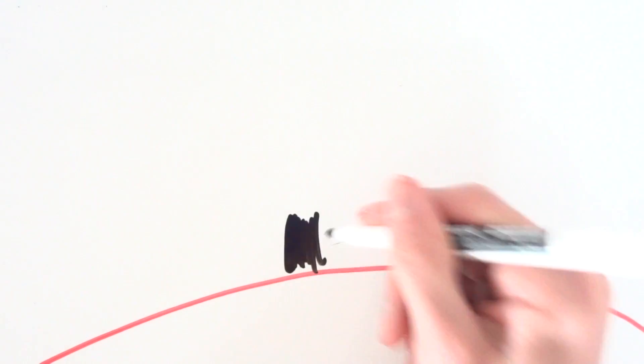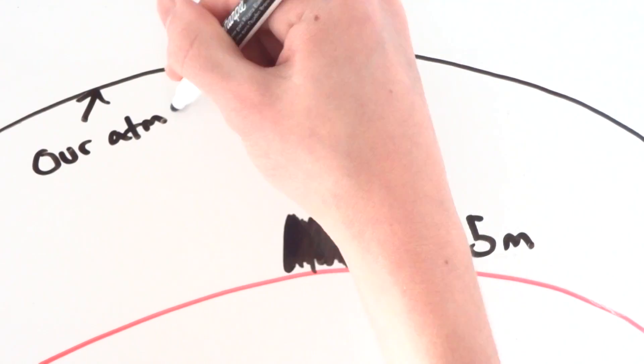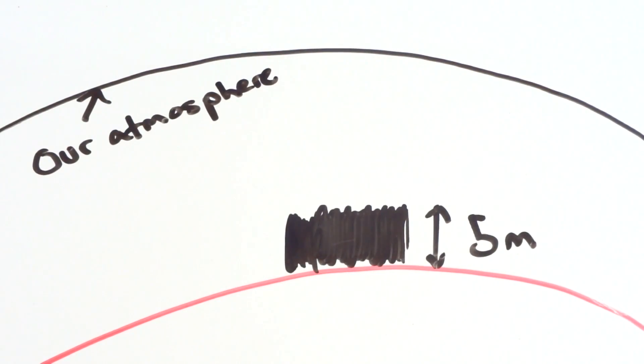Radiation is also a problem. According to Mars One, five metres of Mars soil provides the same protection against radiation as our atmosphere does, which means you wouldn't want to get caught outside.